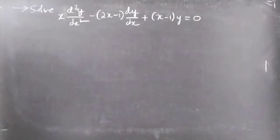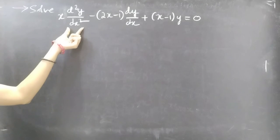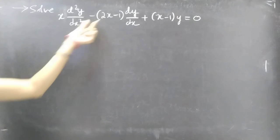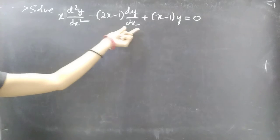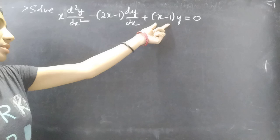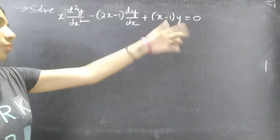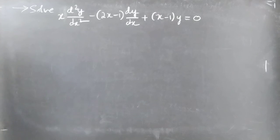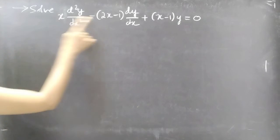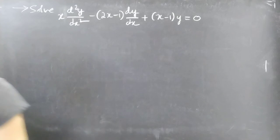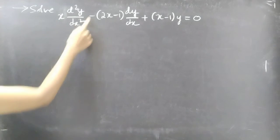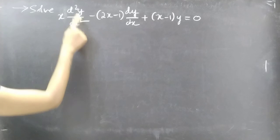The problem: solve x times d²y/dx² minus (2x − 1) times dy/dx plus (x − 1) times y equals 0. We are given a differential equation with variable coefficients, and this is of order 2.